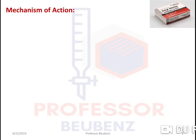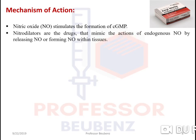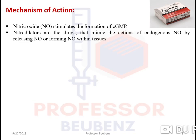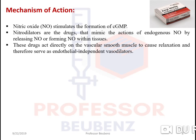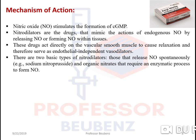Regarding the mechanism of action of nitrovasodilators: nitric oxide stimulates the formation of cGMP. Nitrovasodilators are drugs which mimic the action of endogenous nitric oxide by releasing or forming nitric oxide within the tissues. These drugs act directly on the vascular smooth muscle to cause relaxation and therefore serve as endothelial-independent vasodilators.